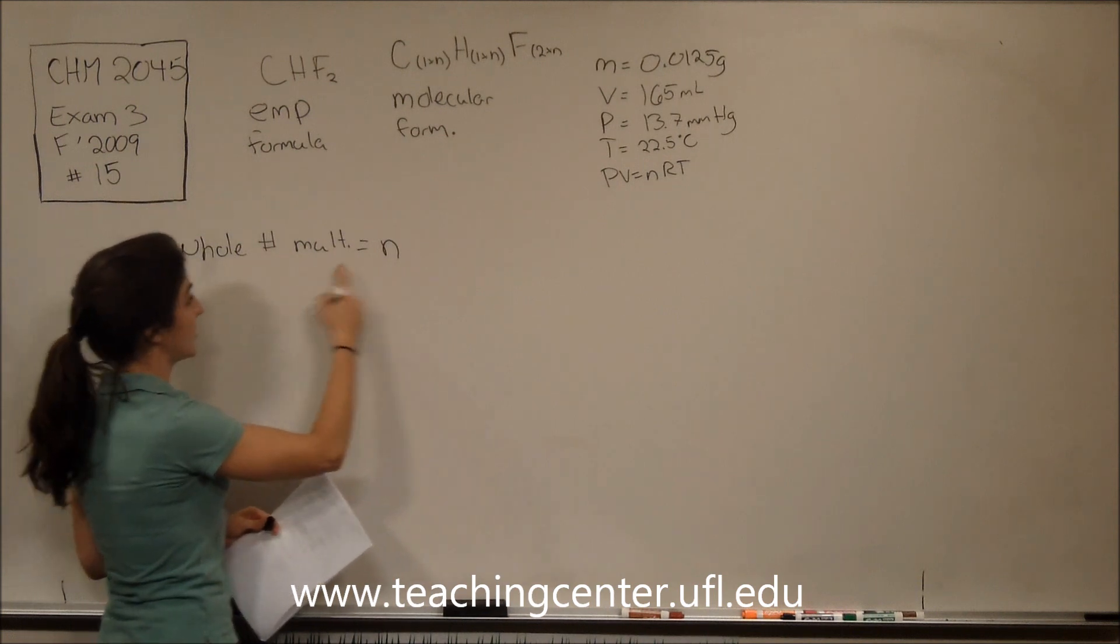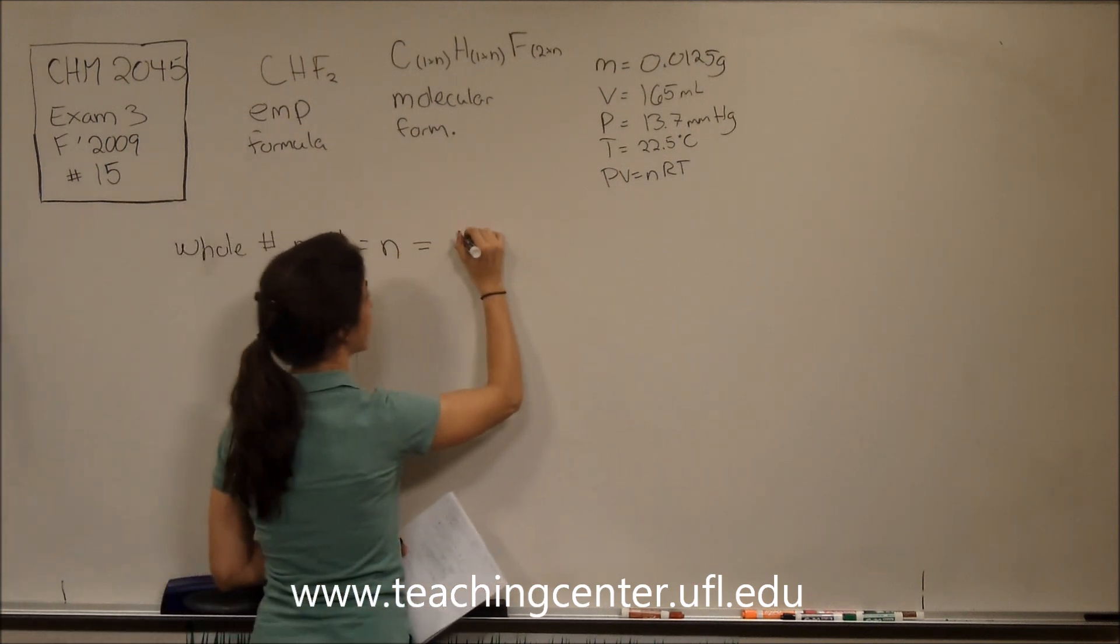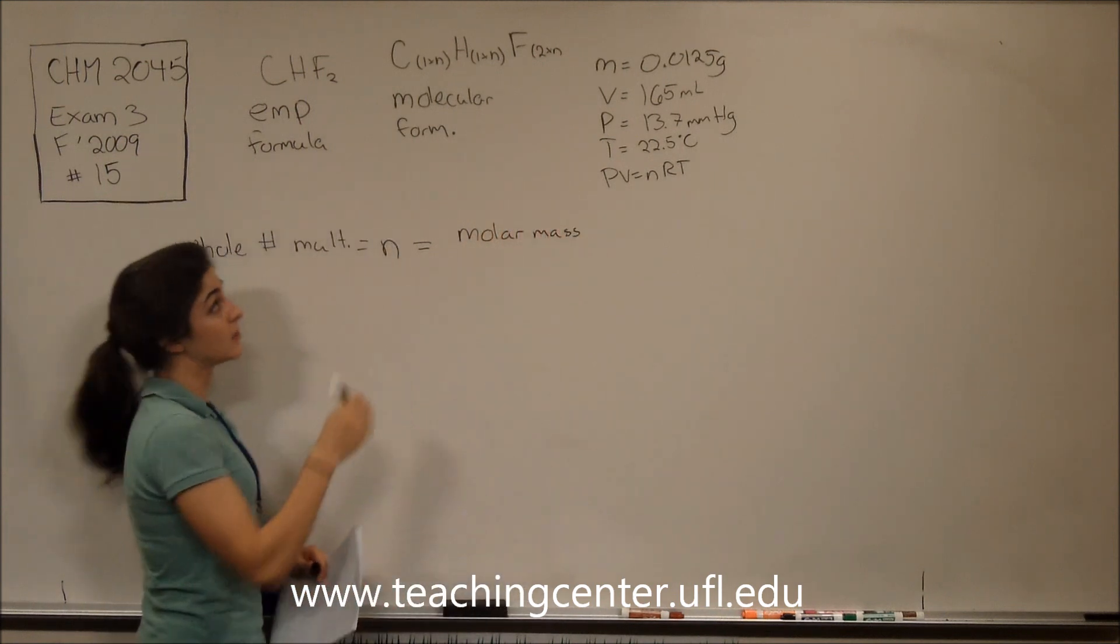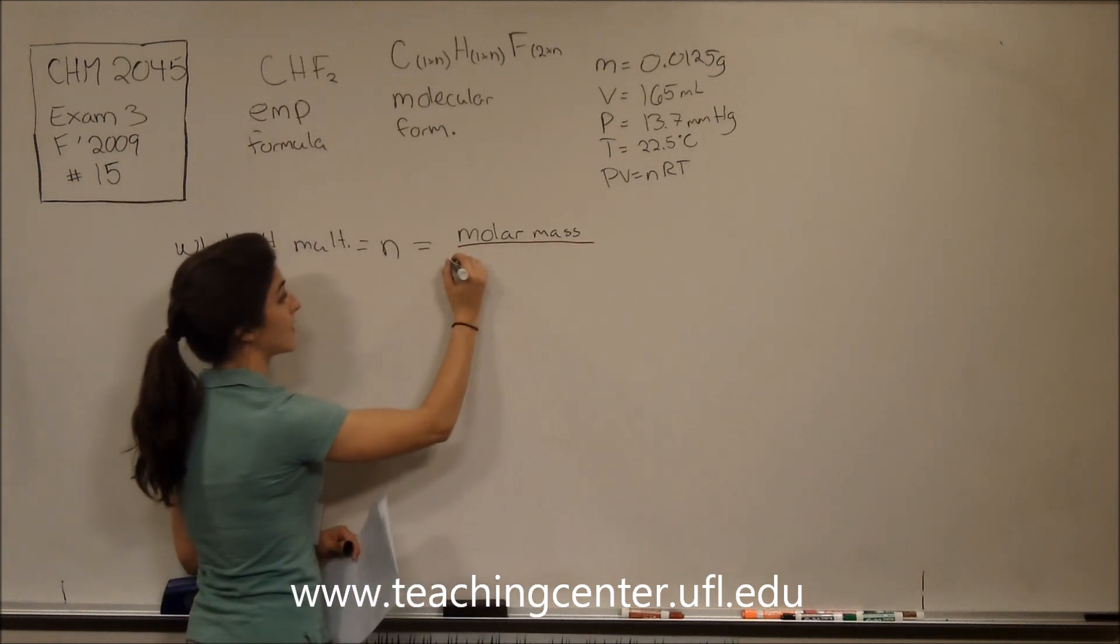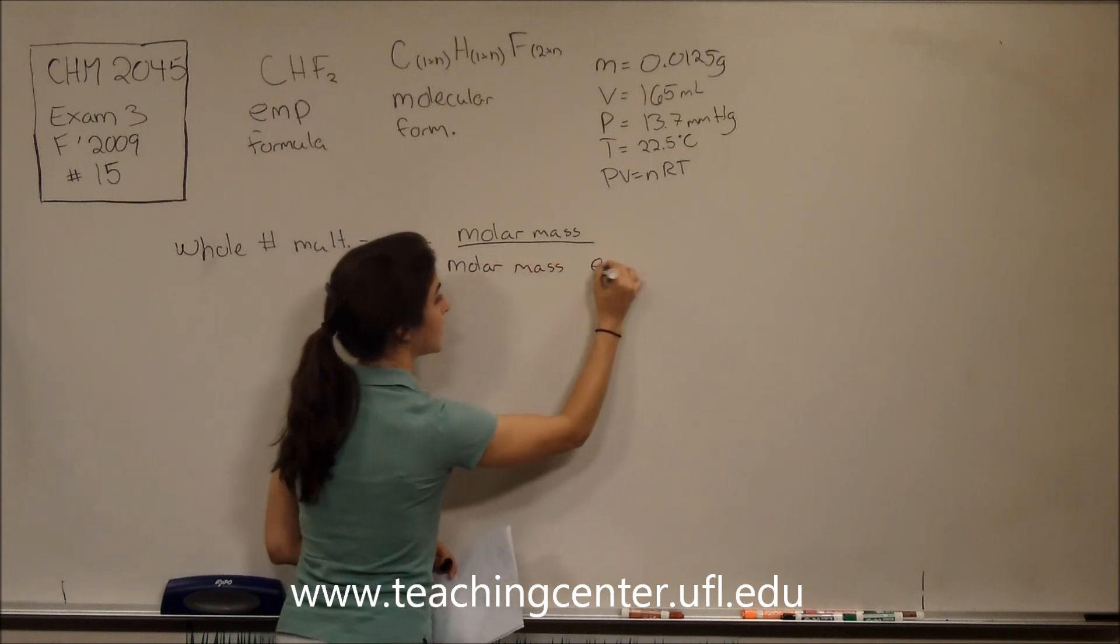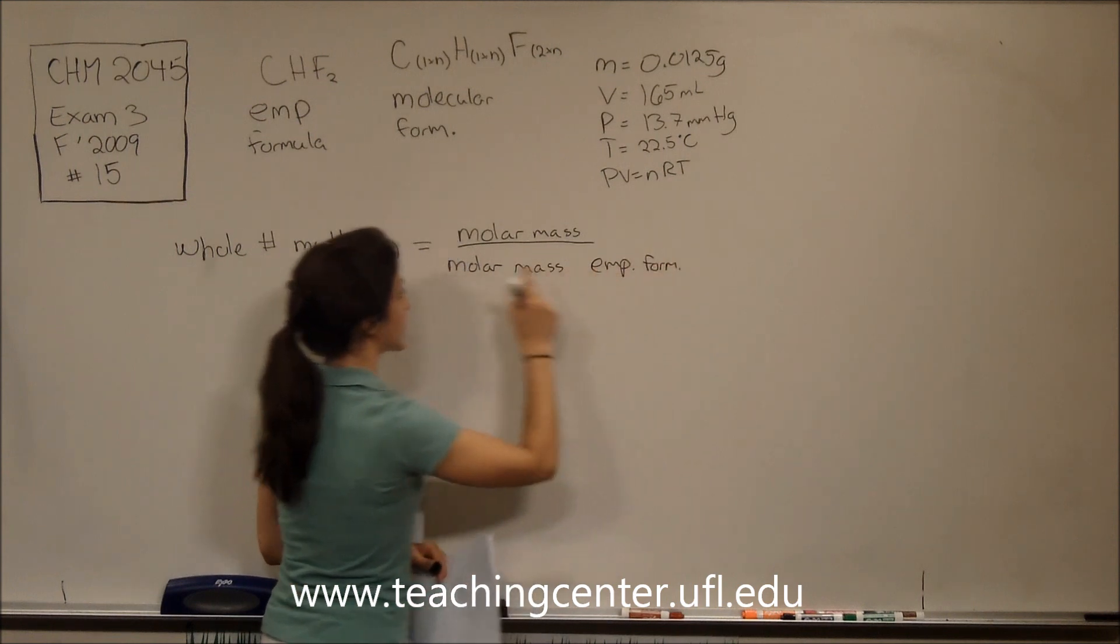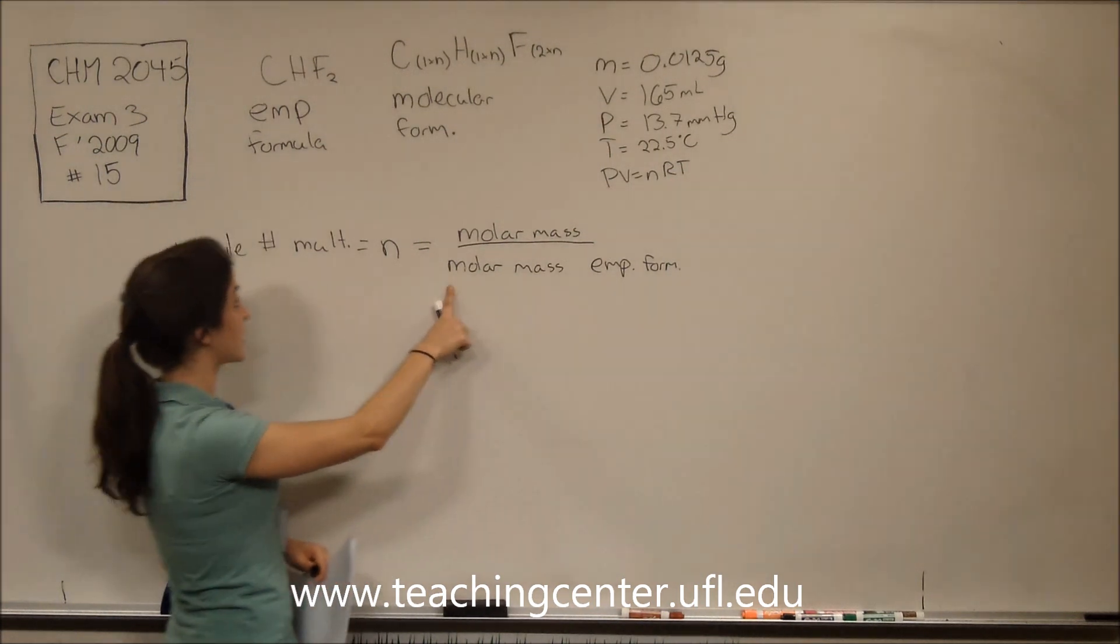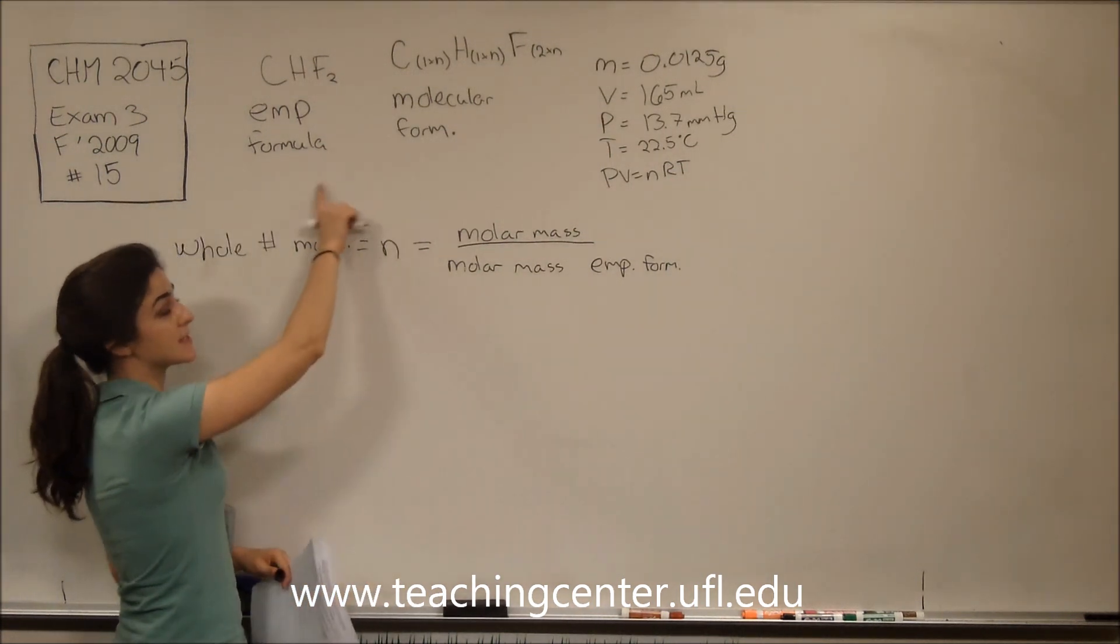So this equation right here, the whole number multiple, is the molar mass of the compound, which will be of the molecular formula, divided by the molar mass of the empirical formula. So we have the real divided by the simplified empirical formula. That's going to give us the whole number that relates these two pieces.